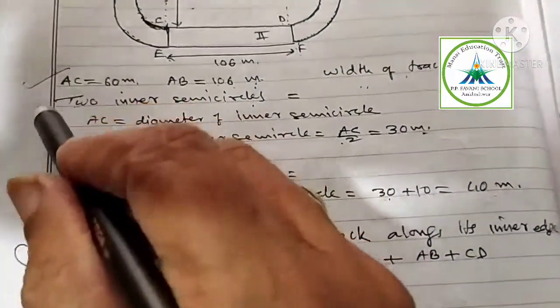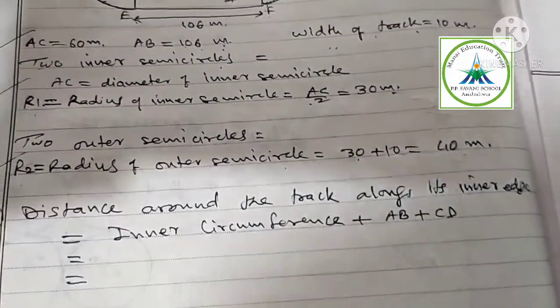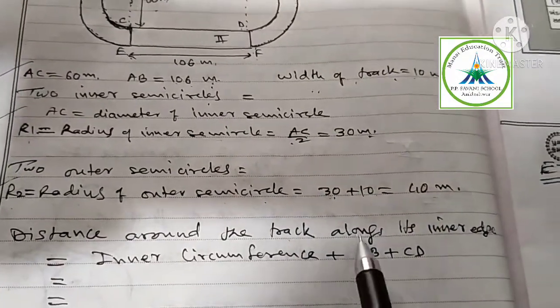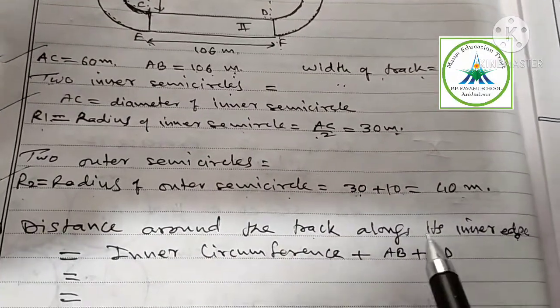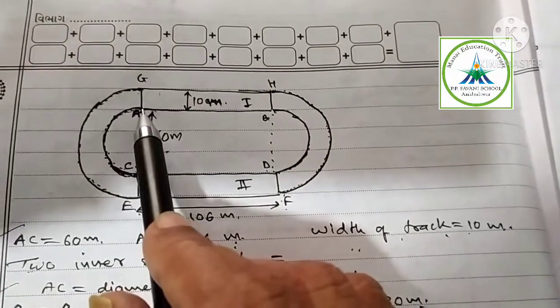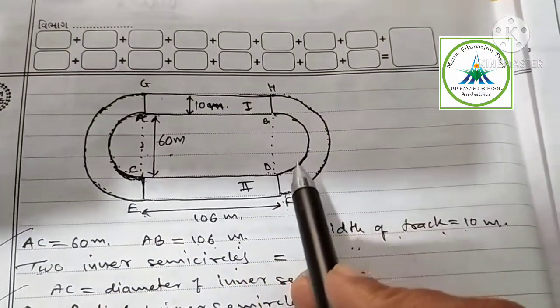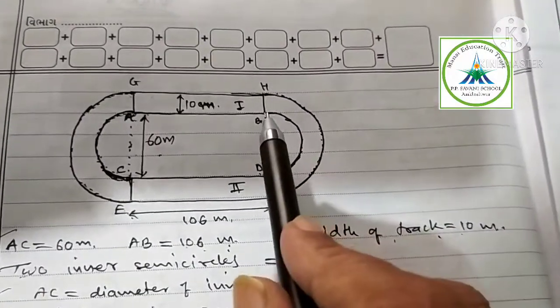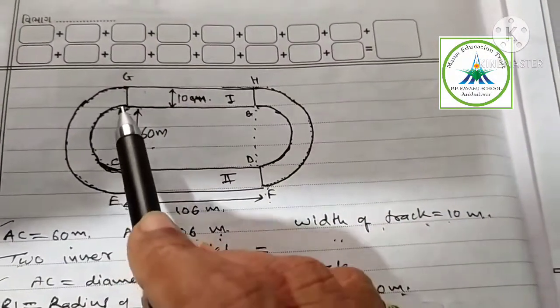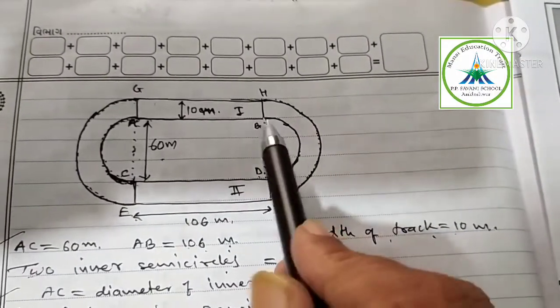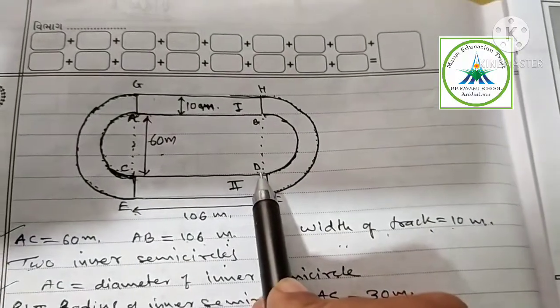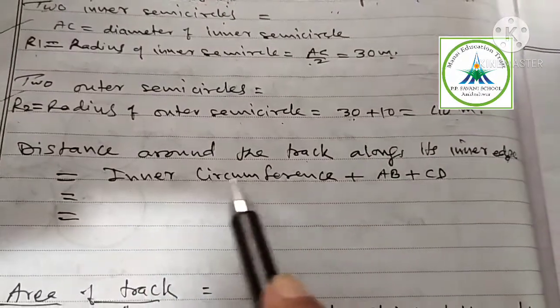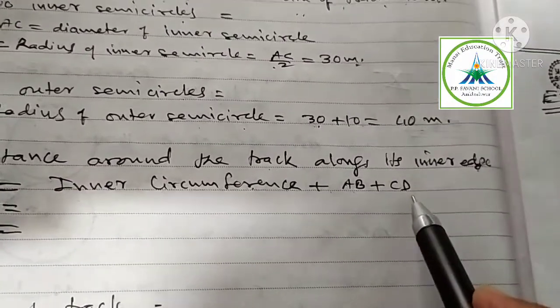Distance around the track along its inner edge. Distance around inner track means from A to B to D to C to A. A, B plus C, D plus this semicircle plus this semicircle. Two semicircle makes one circle. So circumference of one circle plus A, B plus C, D. Distance of inner track along inner edge equal to inner circumference plus AB plus CD.